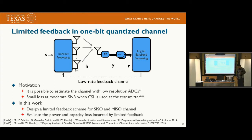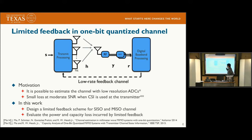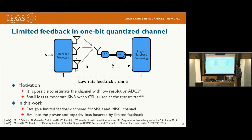In this work we consider limited feedback. There is existing work on channel estimation with one-bit ADCs by Professor Norsak and our group. Once we estimate the channel, the question is how to feed back the channel state information (CSI) to the transmitter. If the transmitter has CSI, it can use channel pre-coding or beamforming to improve performance. We know there is only small loss at moderate SNR when CSI is used at the transmitter. In this work, we design a limited feedback scheme for SISO and MISO channels, and evaluate the power and capacity loss incurred by limited feedback.